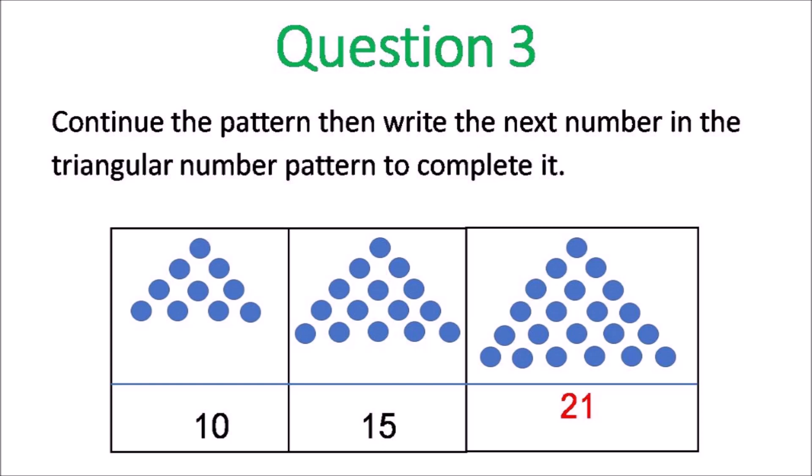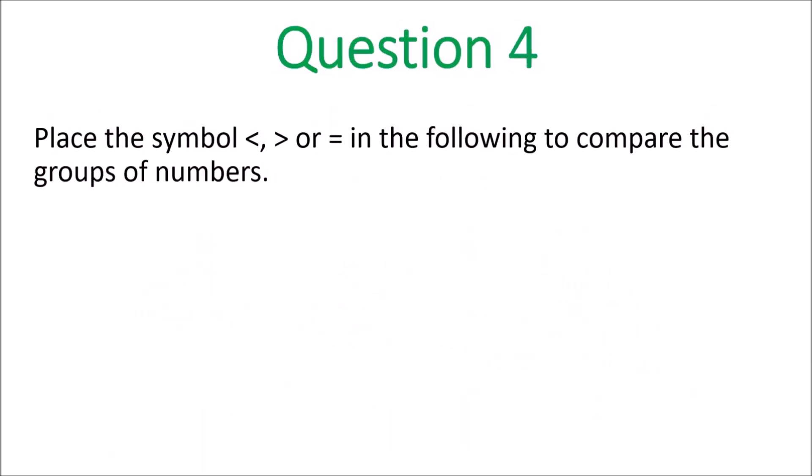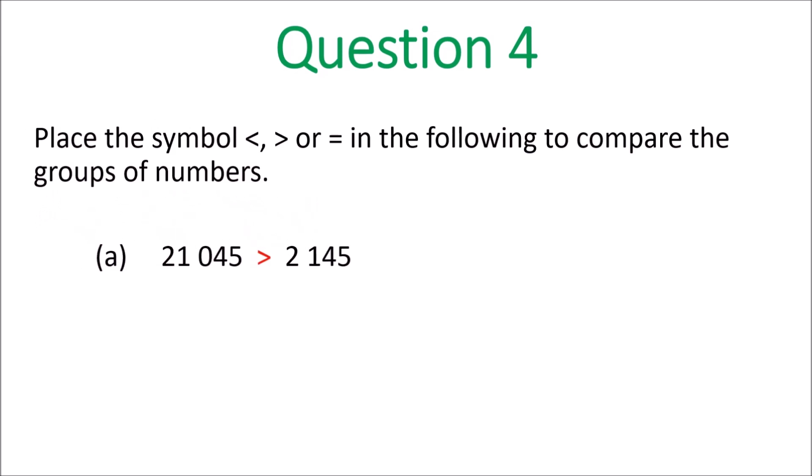You didn't even have to know about triangular numbers — just continue the pattern. Question 4: place the symbol less than, greater than, or equal to, to compare the groups of numbers. Remember, it always points to the smaller number. In A, it has to point to 2,145 — that's smaller than 21,045. In B, those two decimal numbers are equal; no matter how many zeros you add at the back, they are still equal.